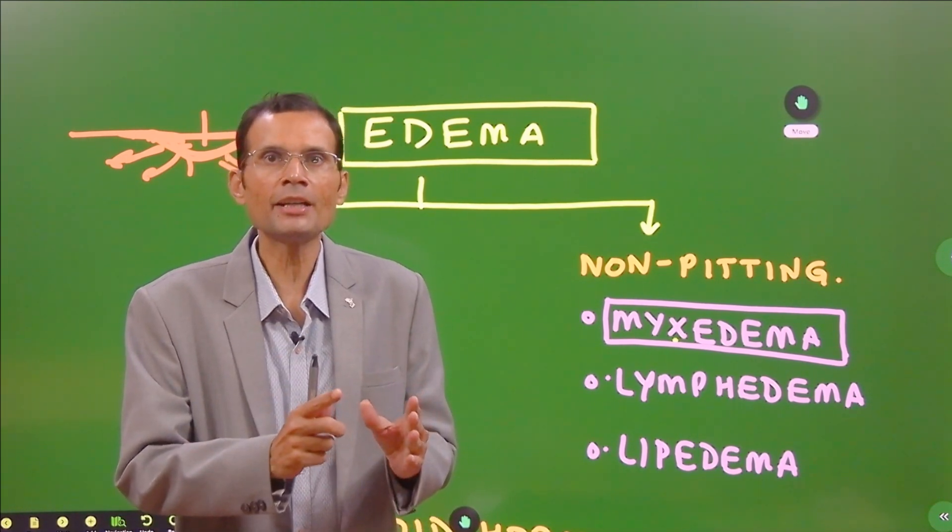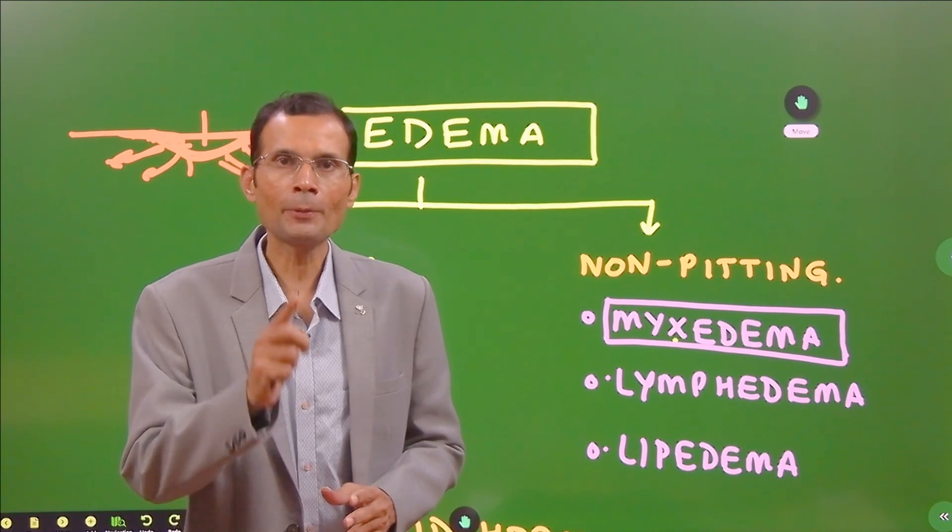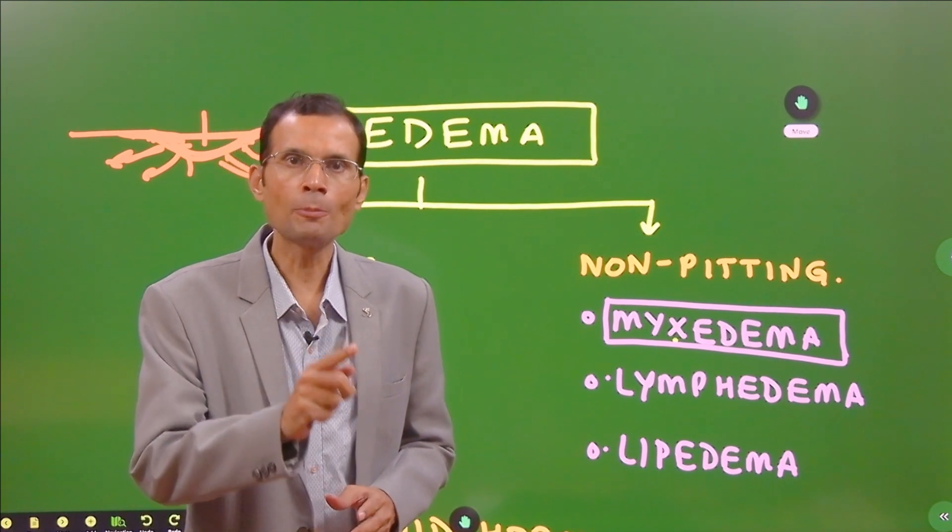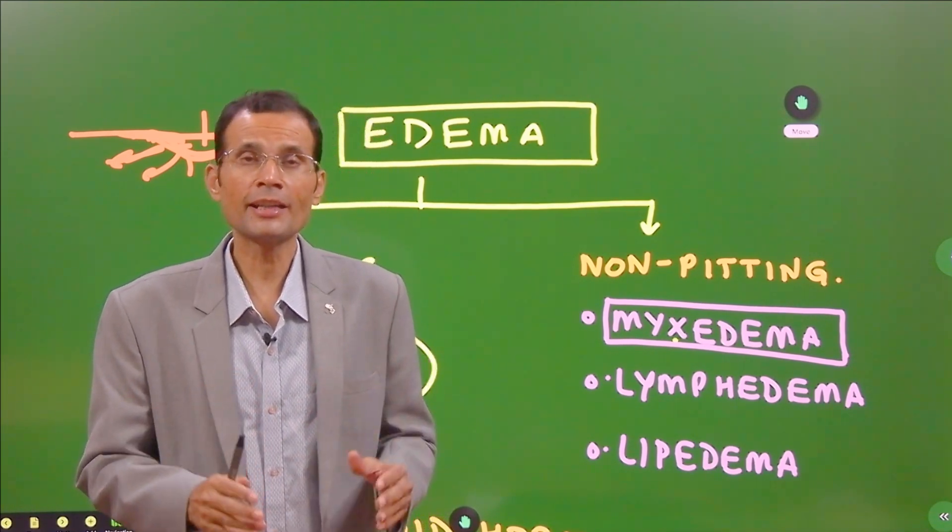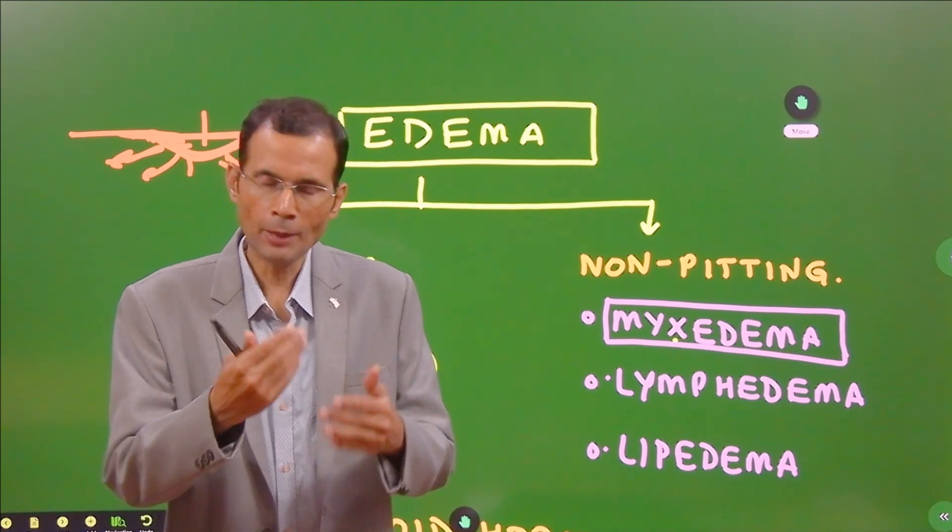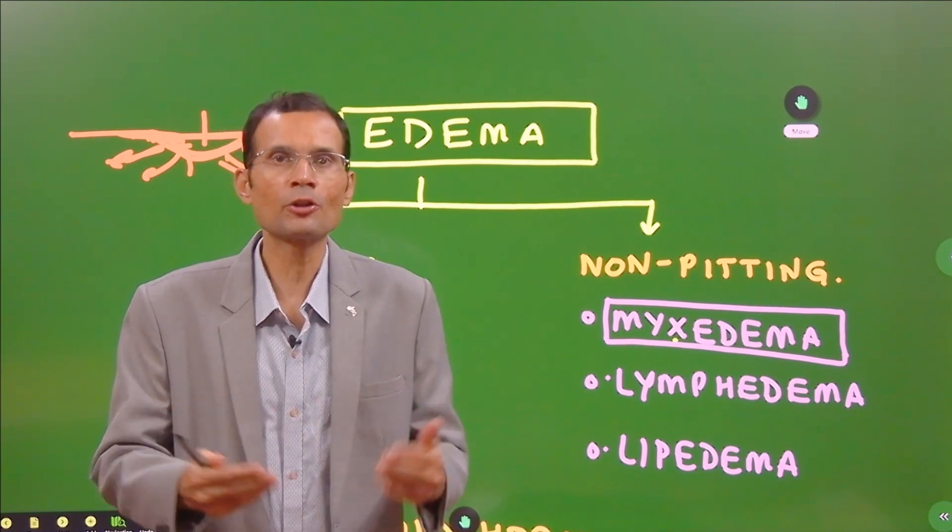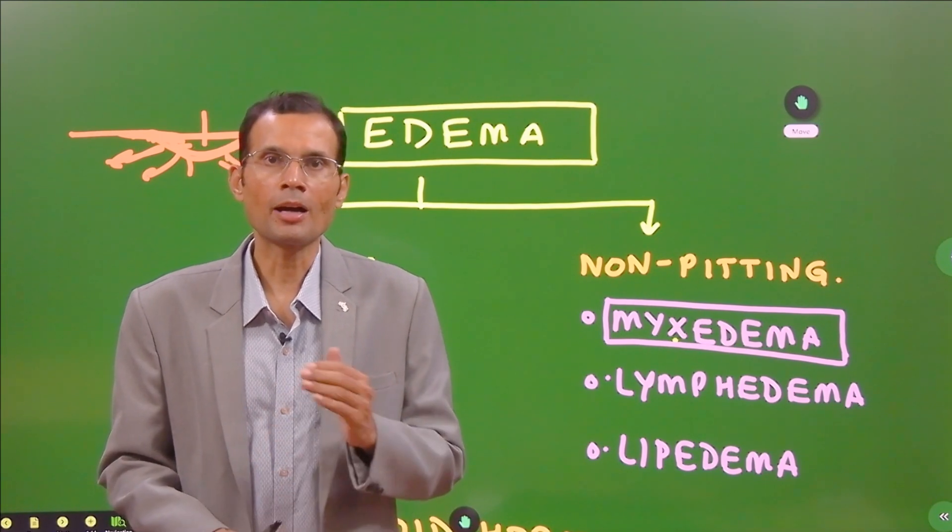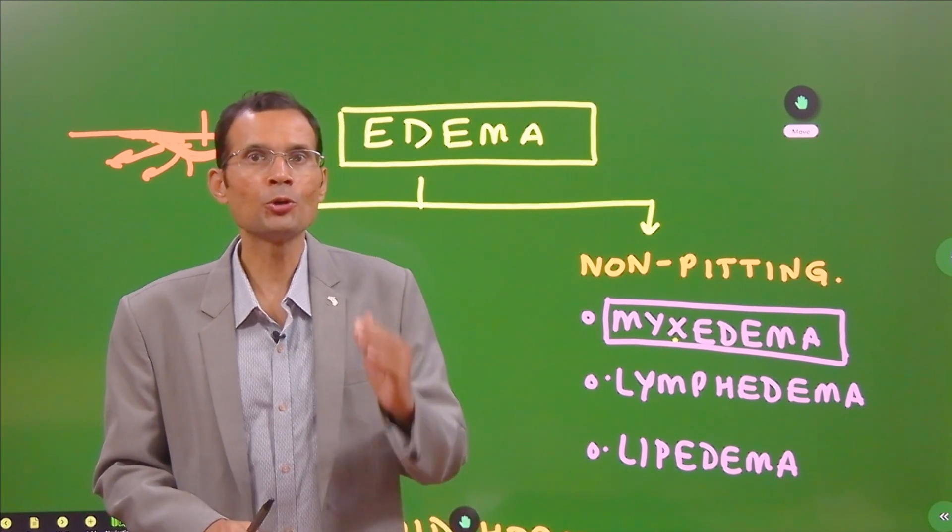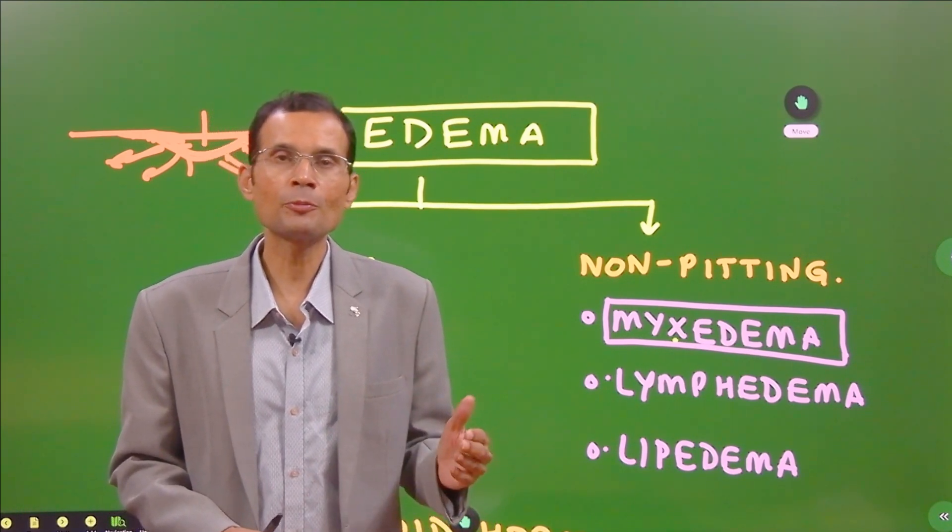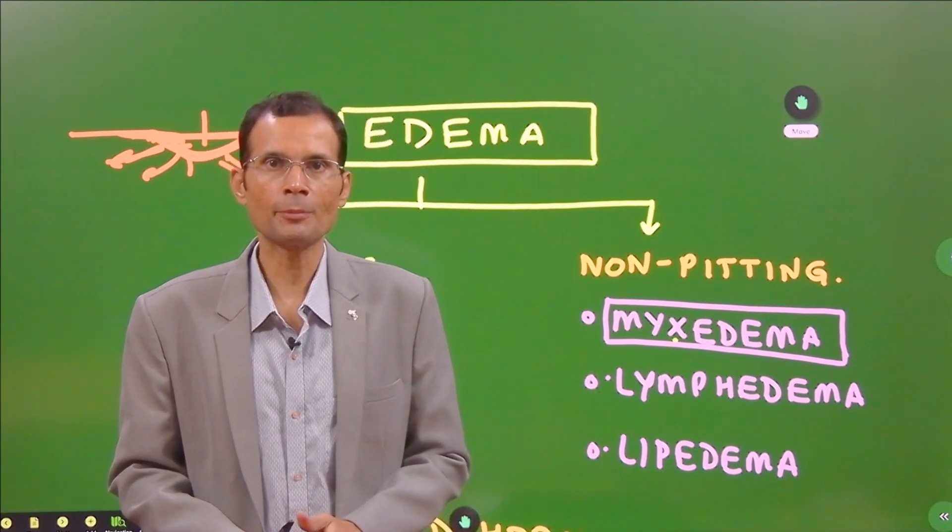Now, when you examine the edema clinically and you apply pressure on the edematous region, it forms a pit. This is the case with most of the edemas from various etiologies. This is the pitting type of edema. But in some cases, you apply the pressure, but there is no pit formation. That would be the non-pitting type of edema.